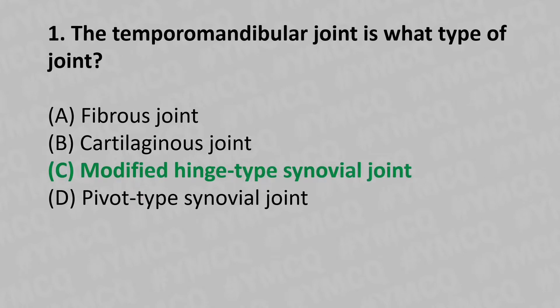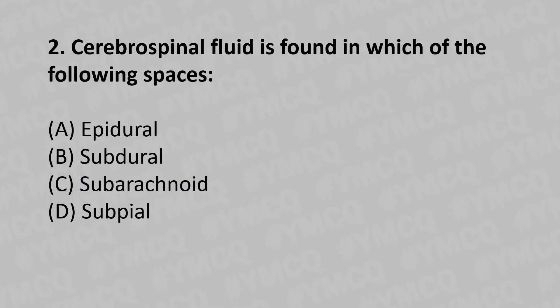The answer is Option C: modified hinge type synovial joint. Moving to our second question: cerebrospinal fluid (CSF) is found in which of the following spaces?